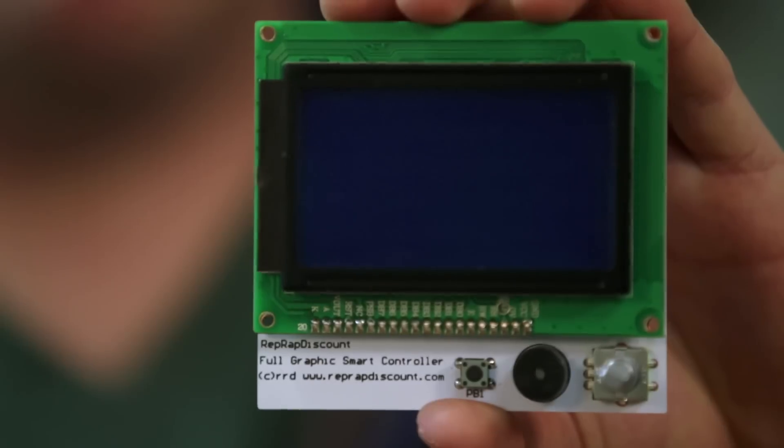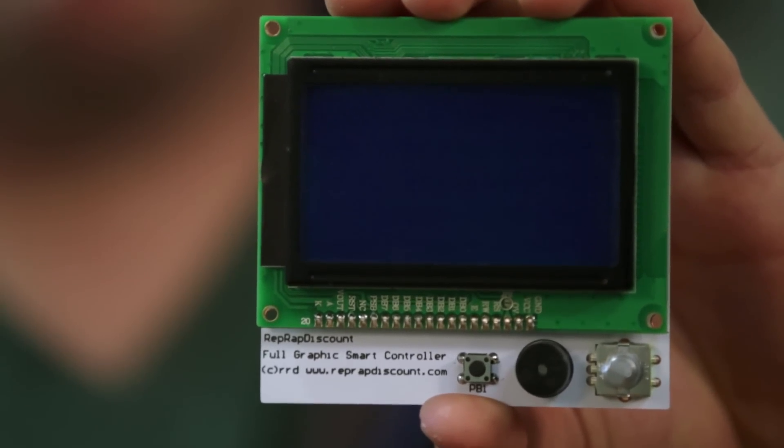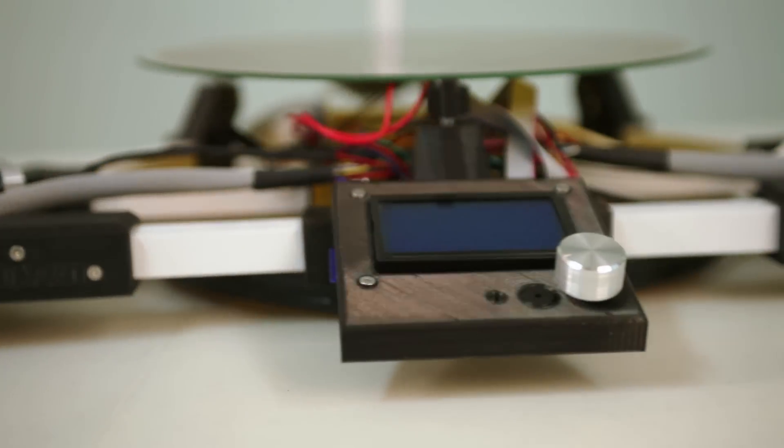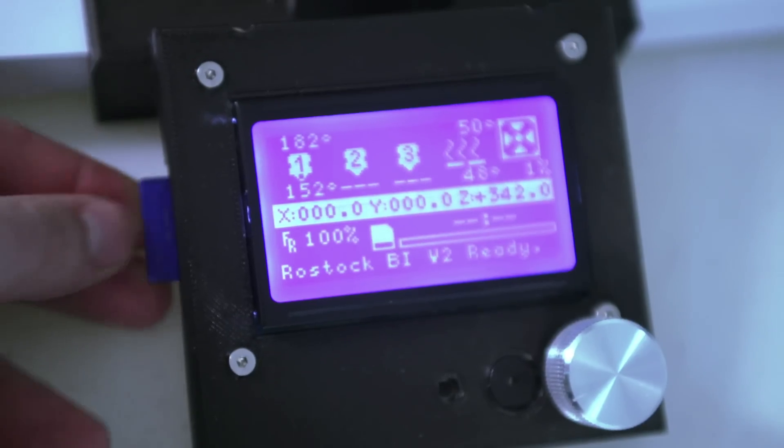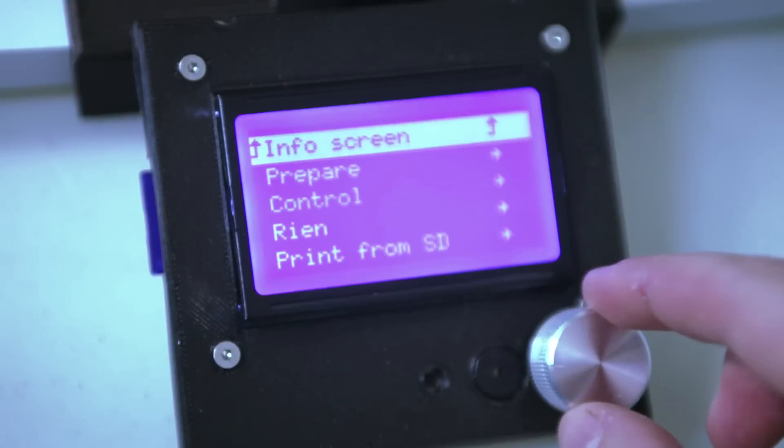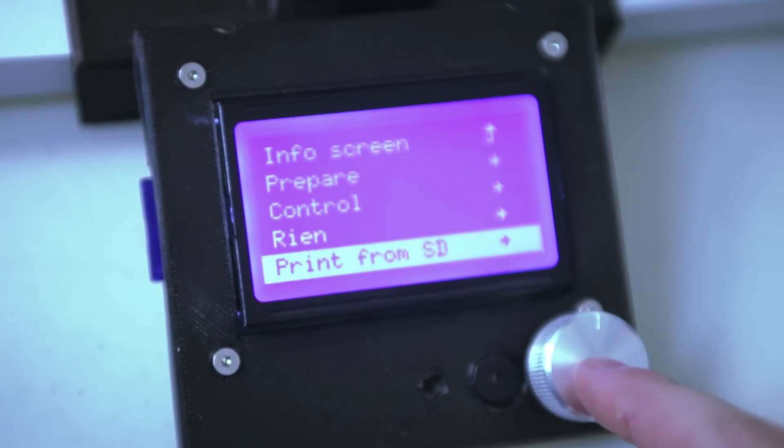We'll also be offering the LCD controller for standalone operation. The LCD controller allows you to control the printer without the need of your computer. You can also load your G-code onto the SD card and execute them directly from the LCD.